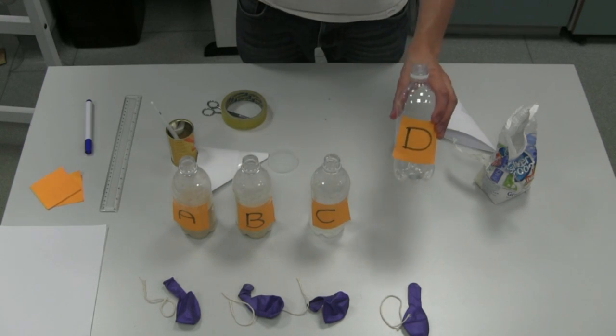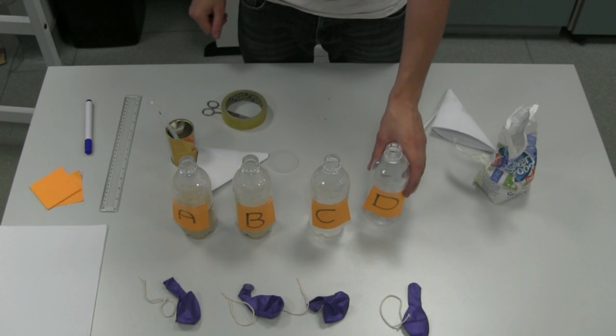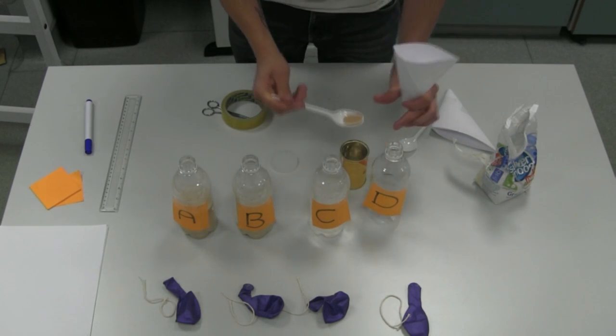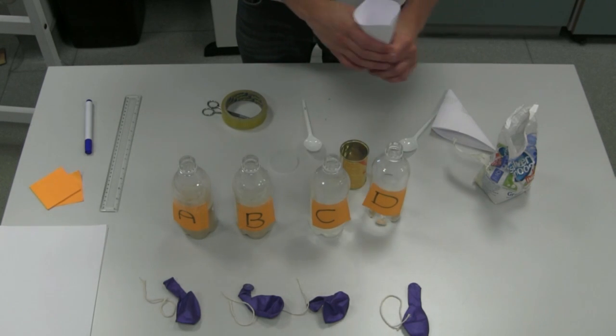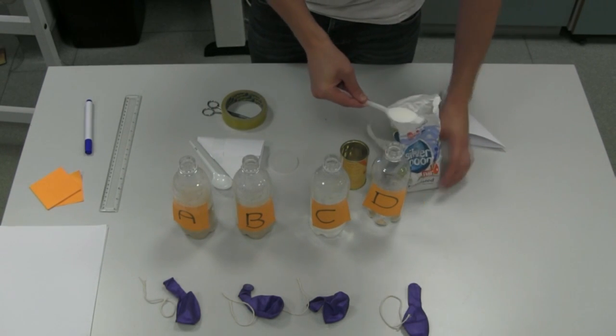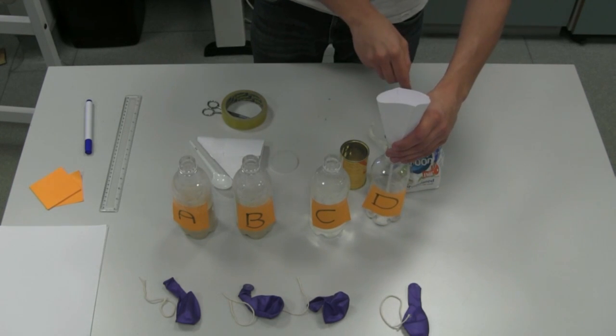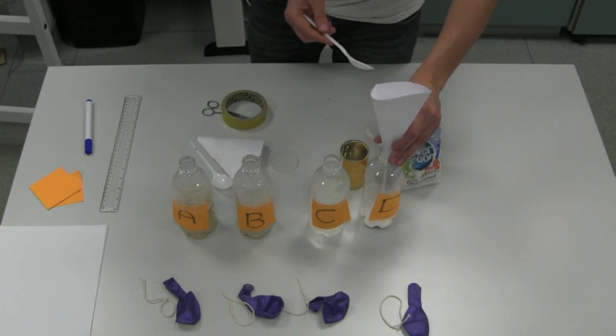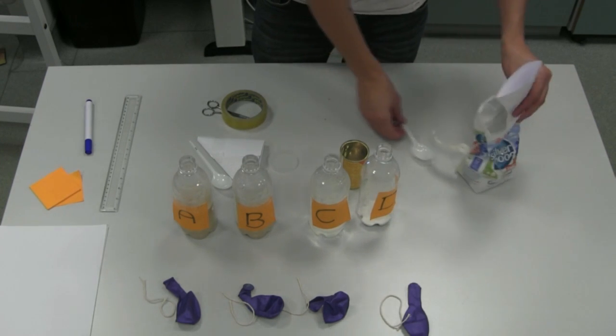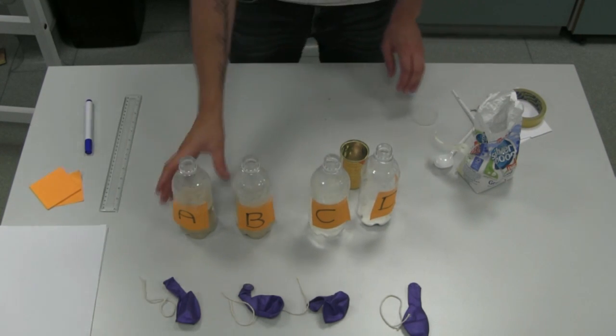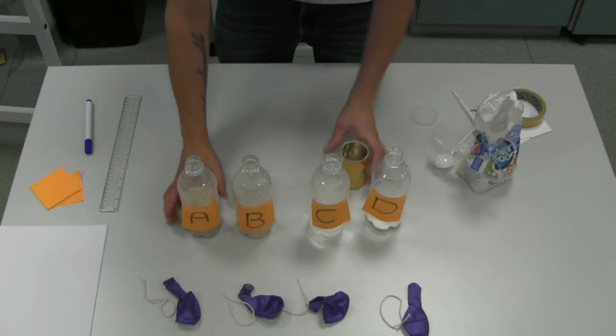In the final bottle D, we're going to add yeast and sugar but with no water. So using the funnel for the yeast, add a small spoon of yeast. Then using the spoon and funnel for the sugar, add the sugar. And give it a good mix.